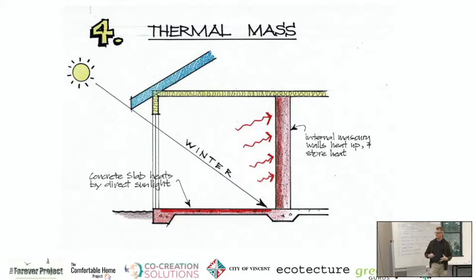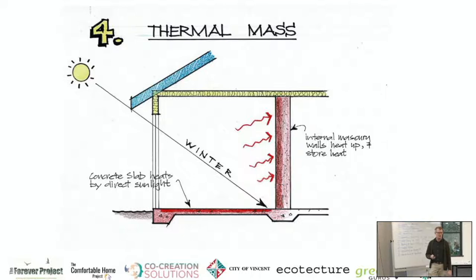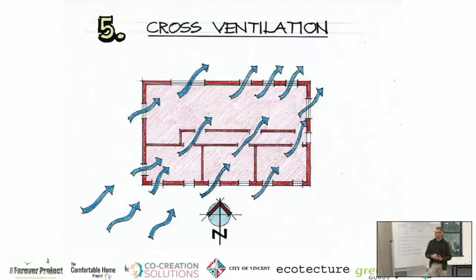Thermal mass is the fourth key — basically heavy, dense material storing heat and then radiating it out. In summer, if your concrete slab is cooler than outside, it's going to absorb heat. It's a great evener of temperature and a really key part of passive solar design.